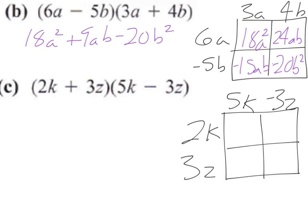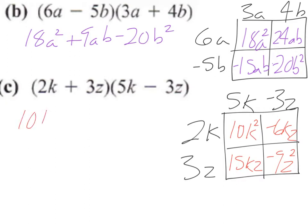For the third example, I set up a 2×2 box the same way and get 10K squared in the top left, negative 6KZ, 15KZ, and negative 9Z squared. All are second-degree terms. Combining the KZ terms — 15 minus 6 gives 9 — the result is 10K squared plus 9KZ minus 9Z squared.